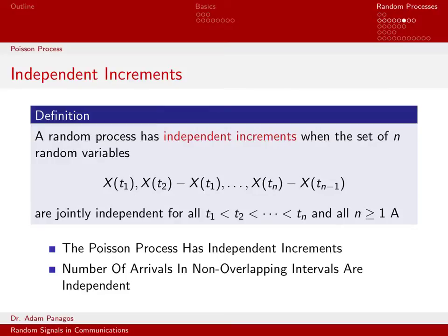There are a few more things about the Poisson process we want to discuss. One of these is what we call the independent increments property. This definition provides us a definition of what we mean by independent increments. Basically, it says that the random variables x at time t1, x at time t2 minus x at time t1 — so this is a random variable, the difference between the random process at time t2 and at time t1 — and then all the way down.